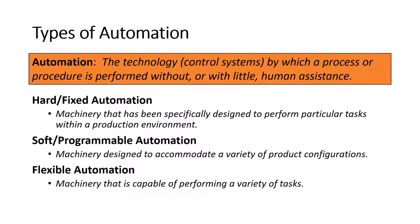First, let's get an understanding of what automation means. Automation is the technology by which a process or procedure is performed without or with very little human assistance. It describes a wide range of technologies that reduce human intervention in processes and manufacturing.